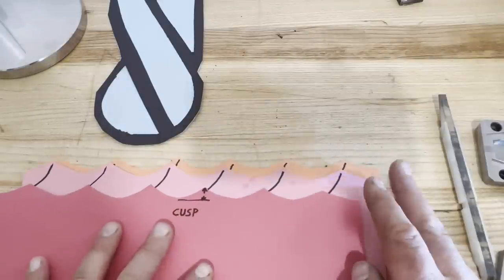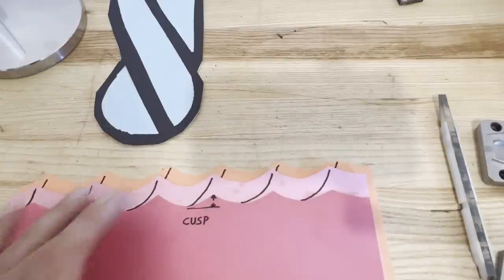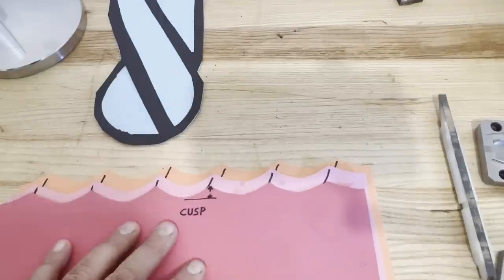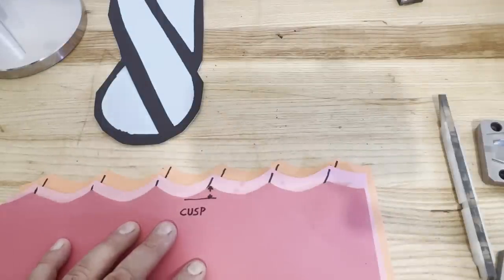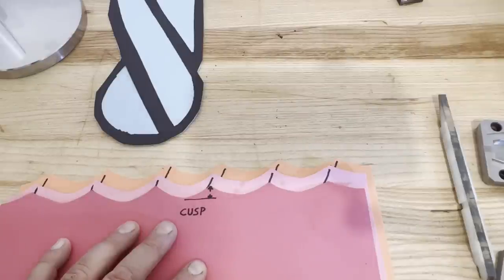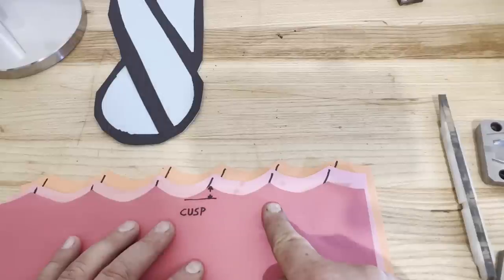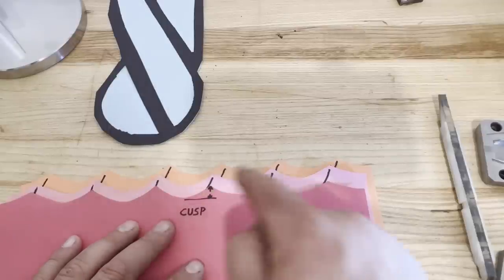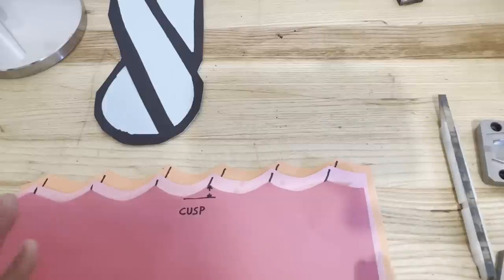If you were to go to a smaller feed per tooth than your step over, what happens is the ridge line from the step over really starts to show up. Your surface finish is still controlled by your step over. It just now has more of a lined appearance. You didn't really do anything other than raise the cycle time.